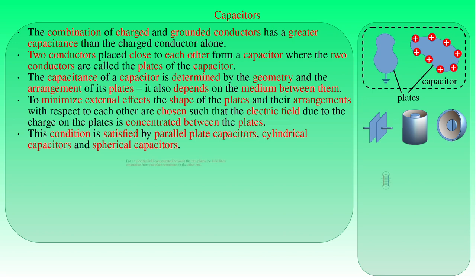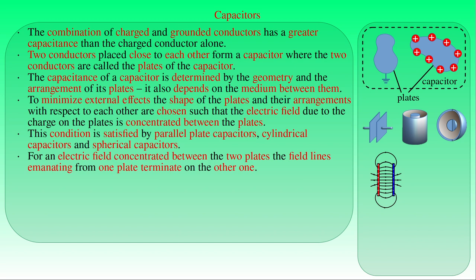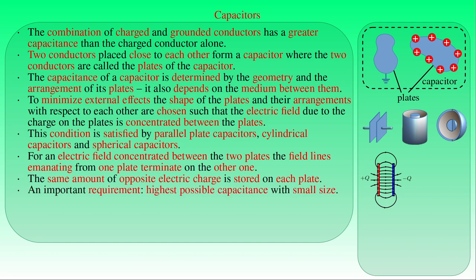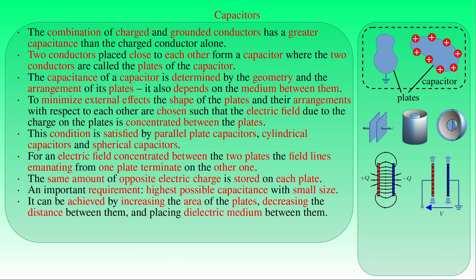If the electric field is concentrated inside a capacitor, then the electric field lines emanating from one of its plates must terminate on the other plate. As a result, the same amount of opposite electric charge is stored on each plate. One of the most important requirements for capacitors is the highest possible capacitance even with small size. Capacitance can be increased by modifying size — that is, increasing the area of the plates — or modifying the geometrical arrangement — that is, decreasing the distance between the plates. We can also increase the capacitance of a capacitor by placing a medium between its plates that has a dielectric constant greater than one.